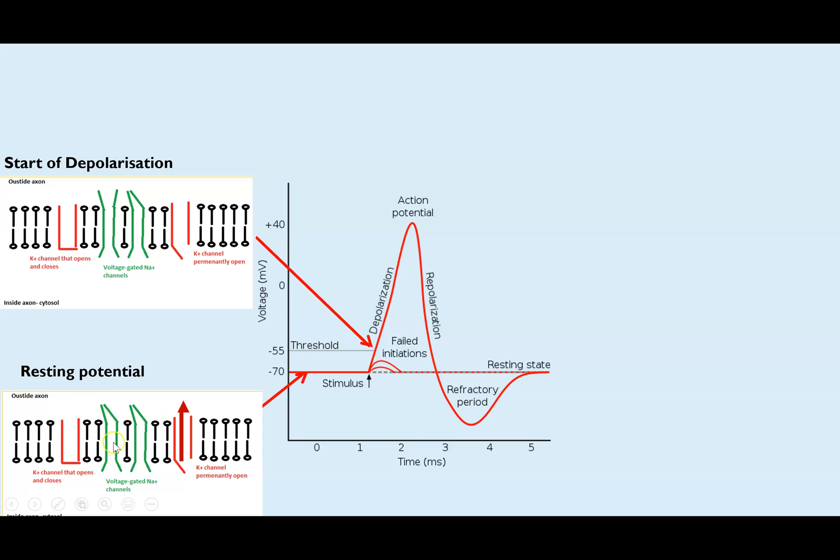And we've got voltage-gated sodium ion channels, which are closed. So we have potassium ions diffusing out, maintaining this minus 70 millivolts voltage.